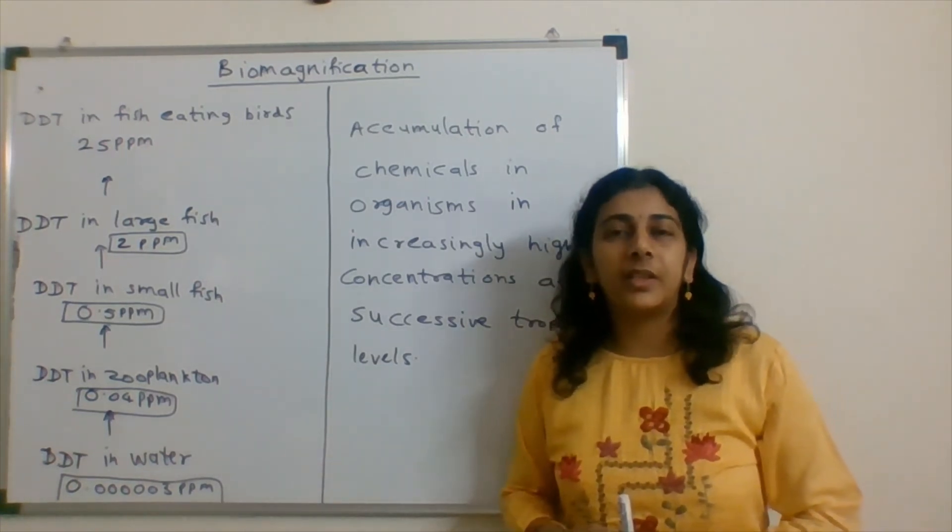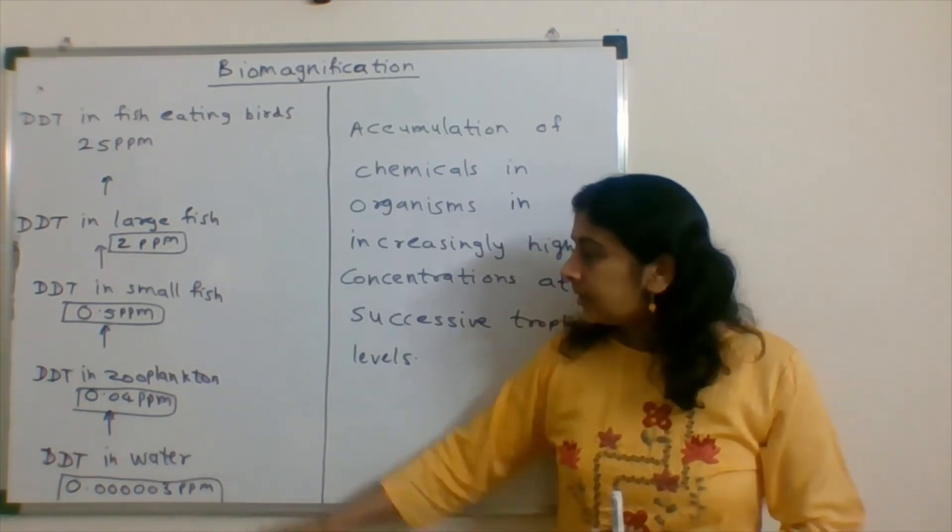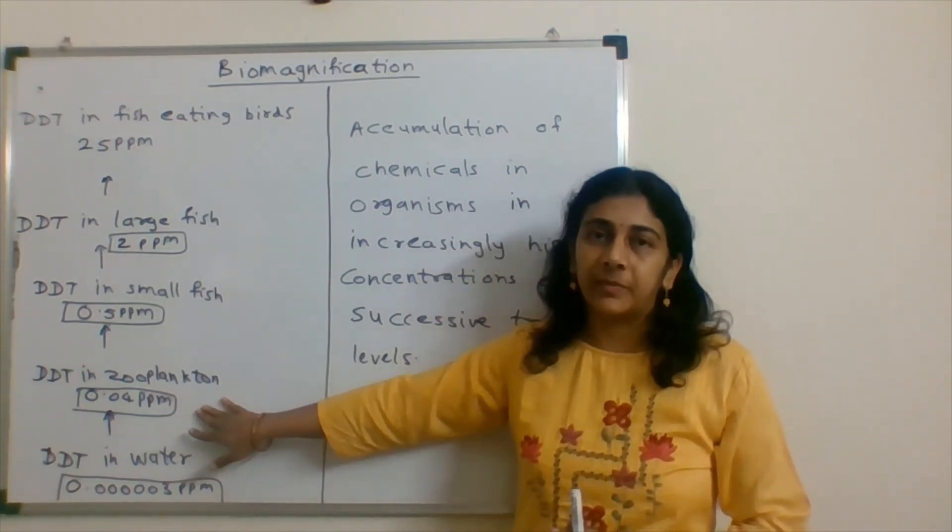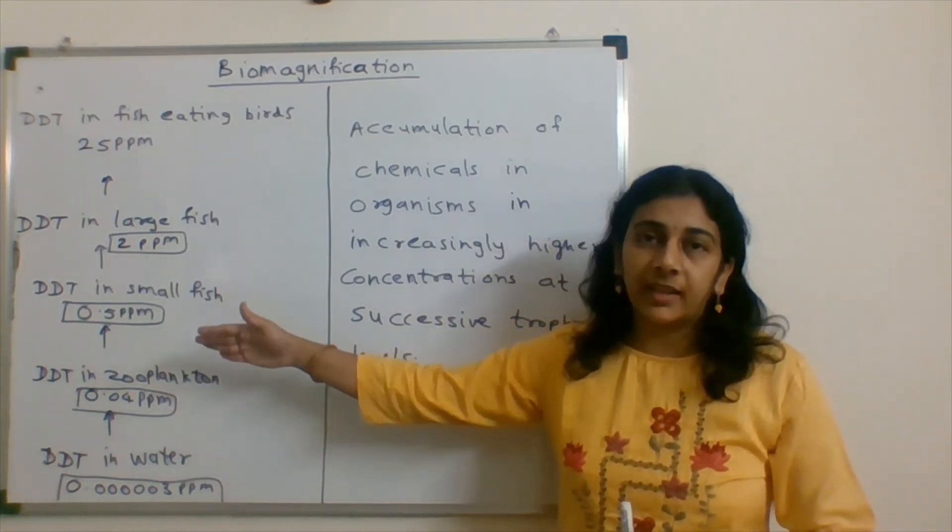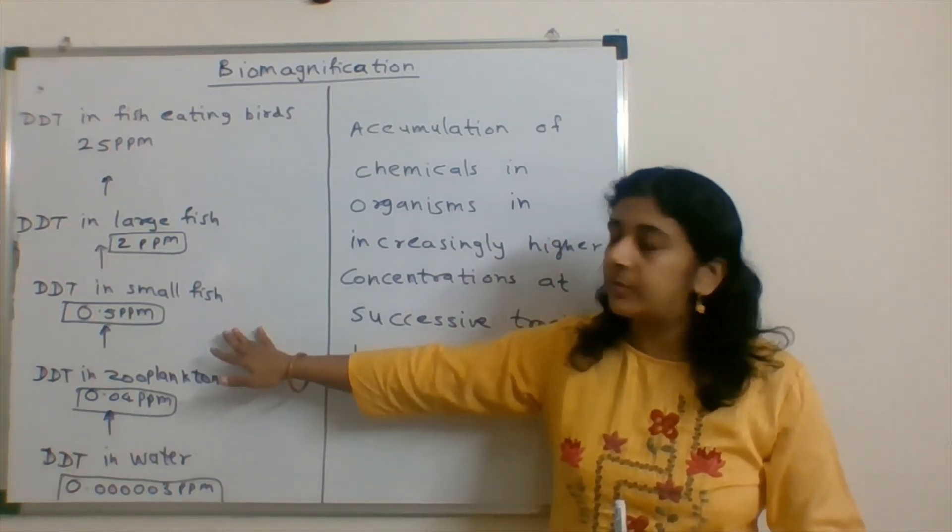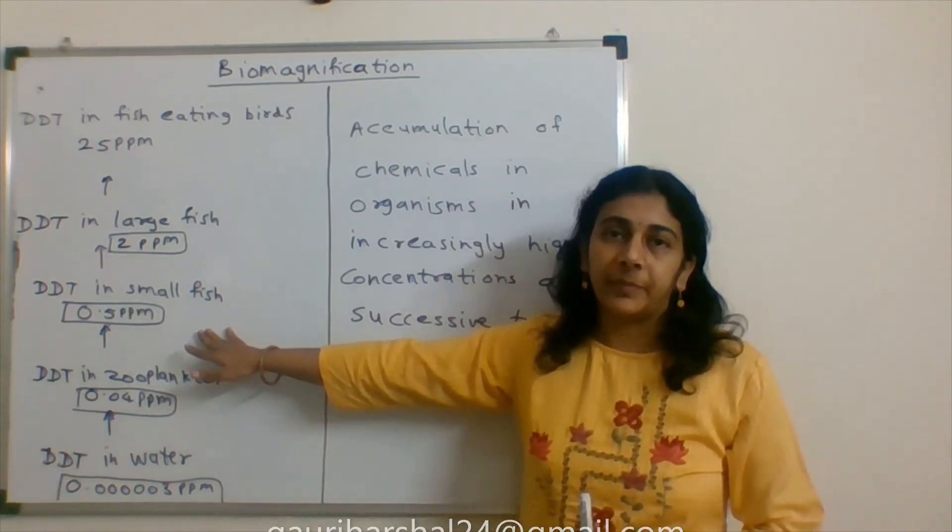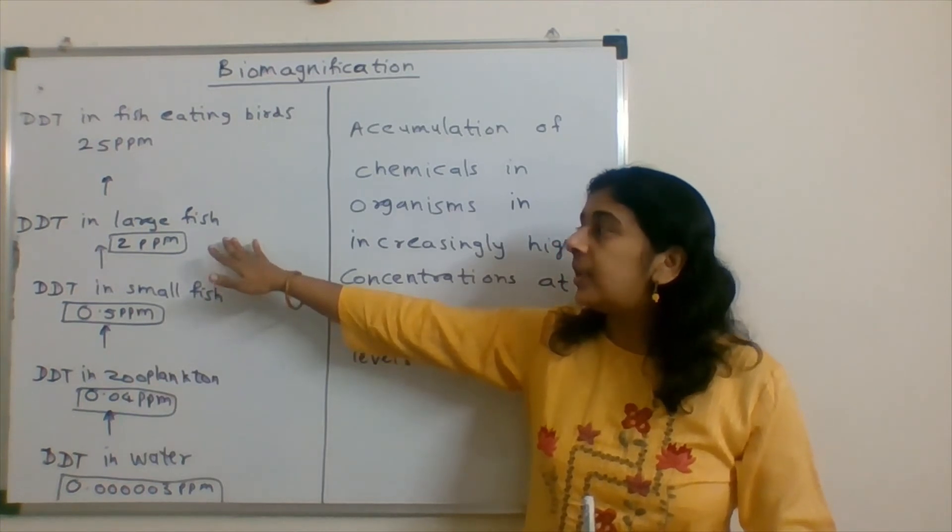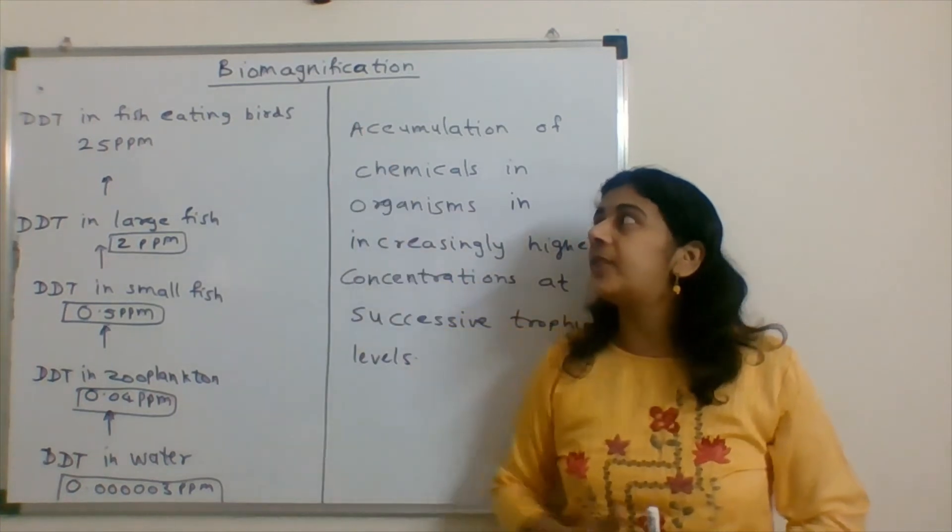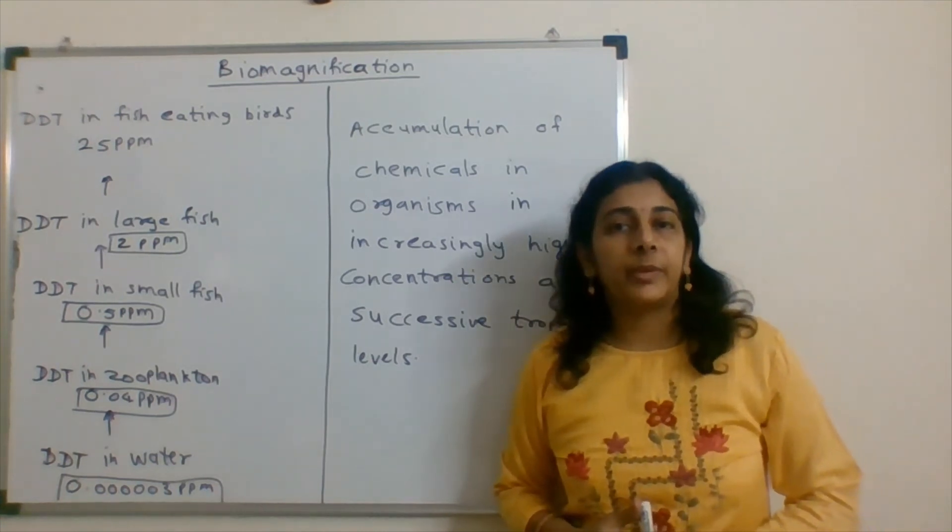If it goes to zooplankton, it accumulates there because it is not water soluble and cannot get excreted from the organism. Concentration in zooplankton is 0.04 ppm. Moving to secondary consumers, here concentration is 0.5 ppm. In large fish it is 2 ppm, and in fish eating birds, the top consumers, it becomes 25 ppm.